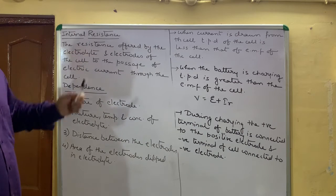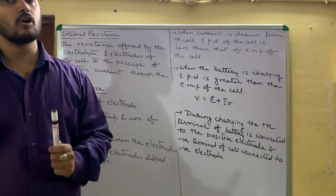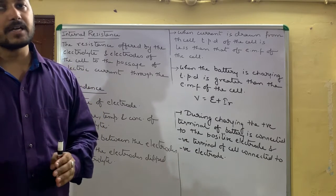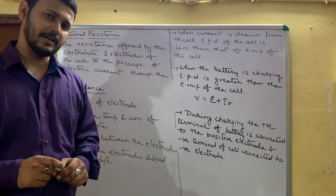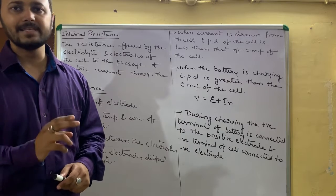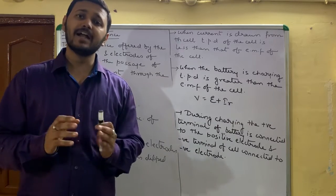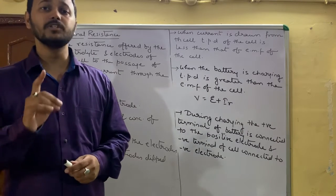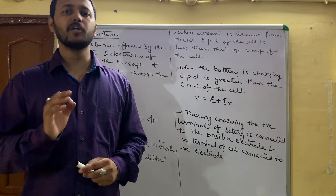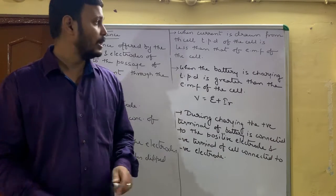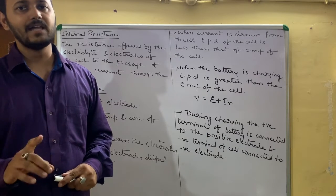इन चार चीज़ों पर आपका internal resistance of the cell depend करता है. जब भी किसी cell या battery से current draw किया जायेगा, तो terminal potential difference EMF of the cell से कम होगा — the value of terminal potential difference will be less than the EMF of the cell. And when the battery is charging, terminal potential difference will be larger than the EMF of the cell.